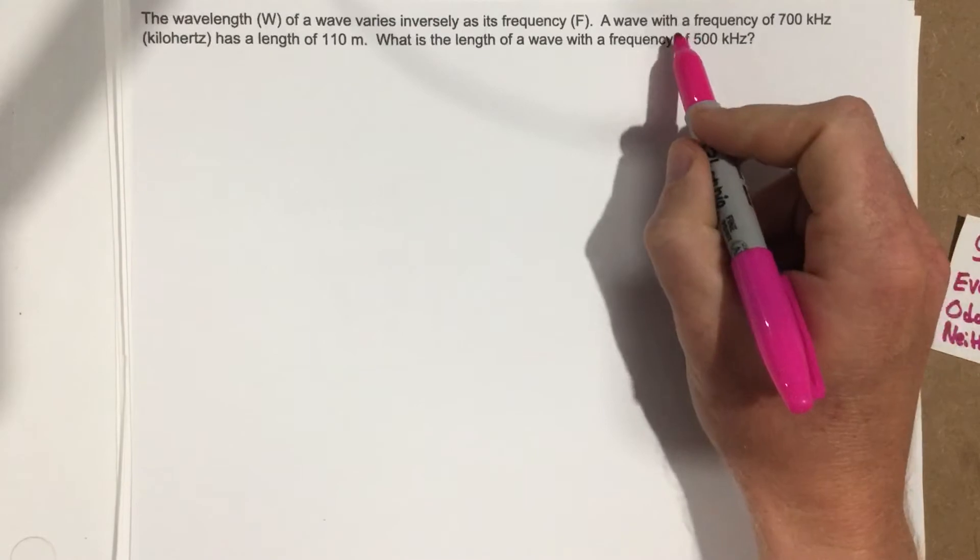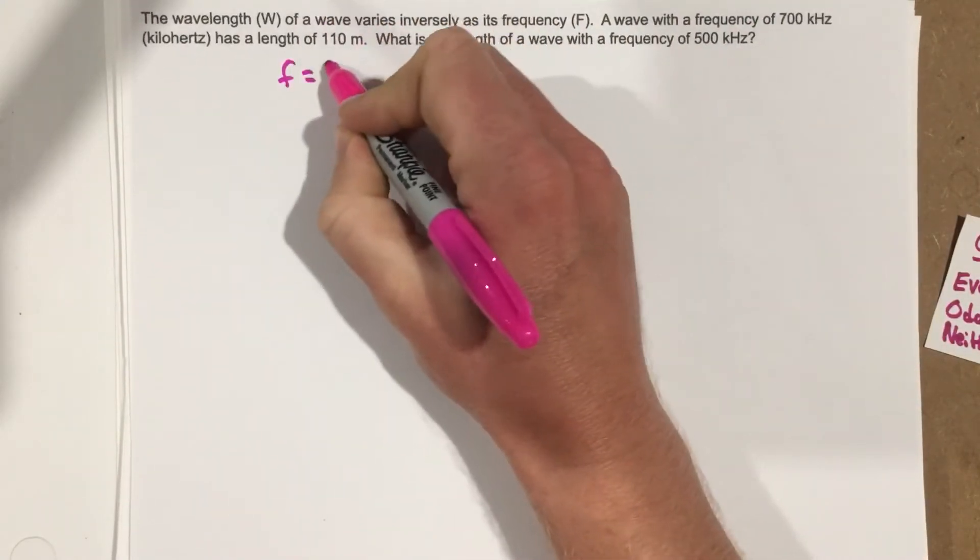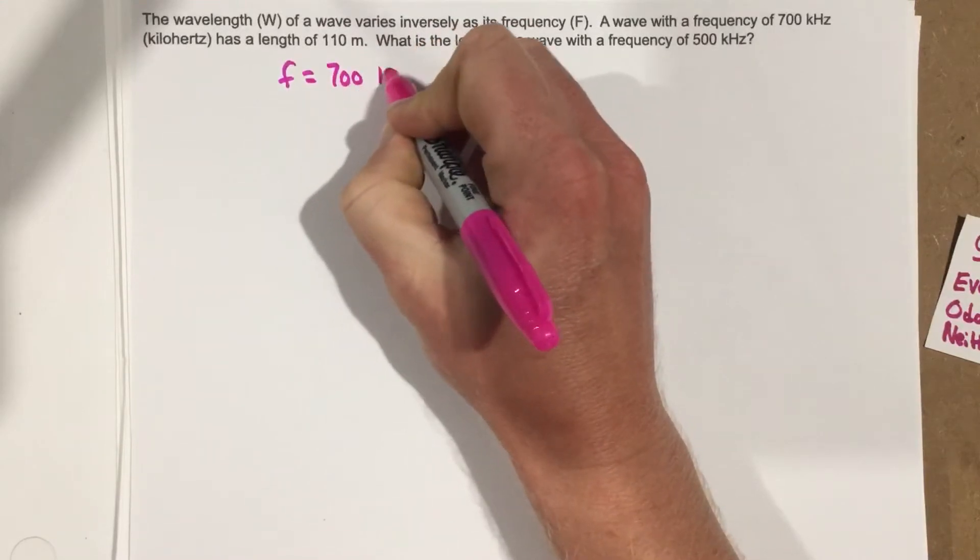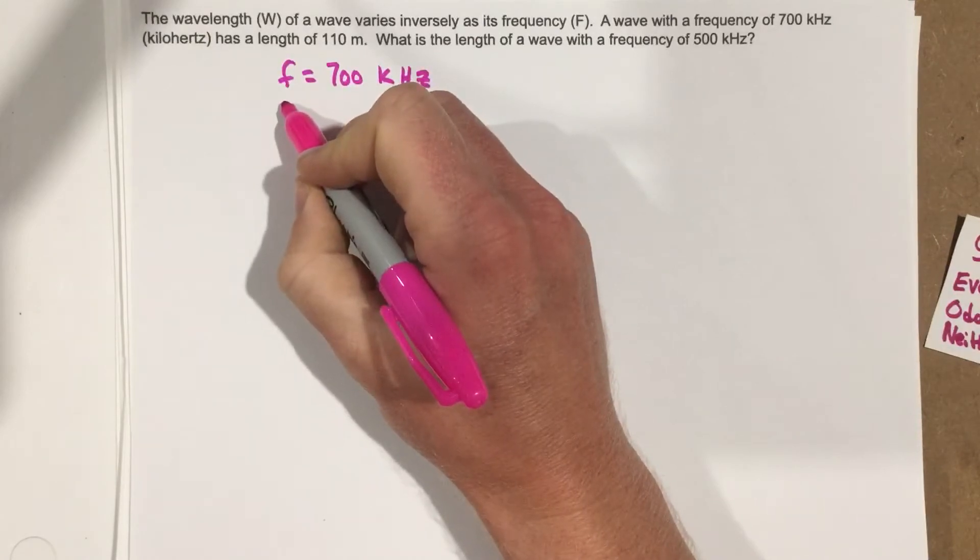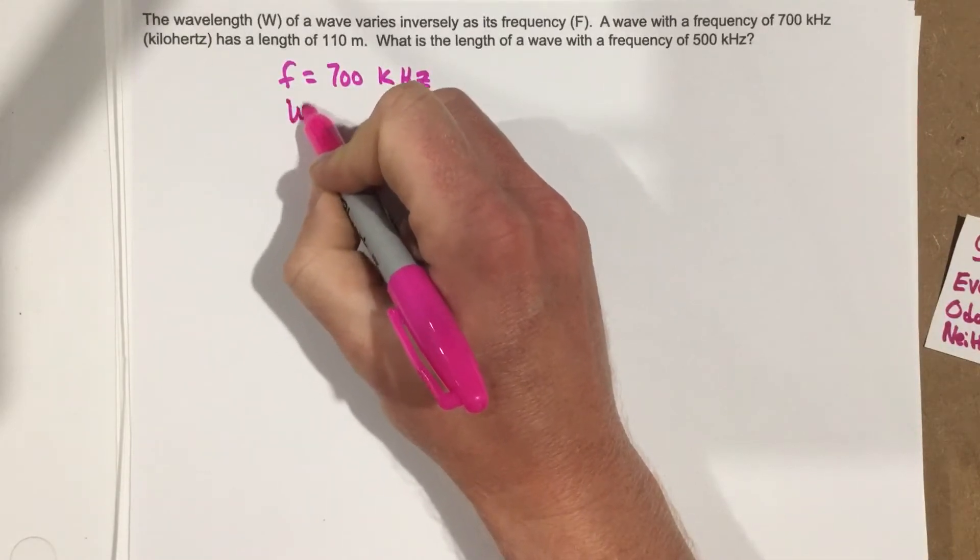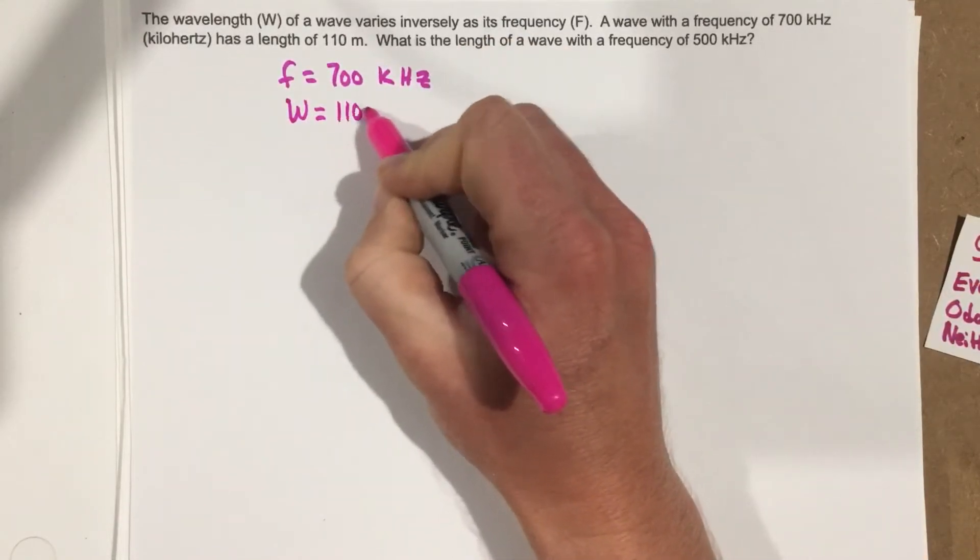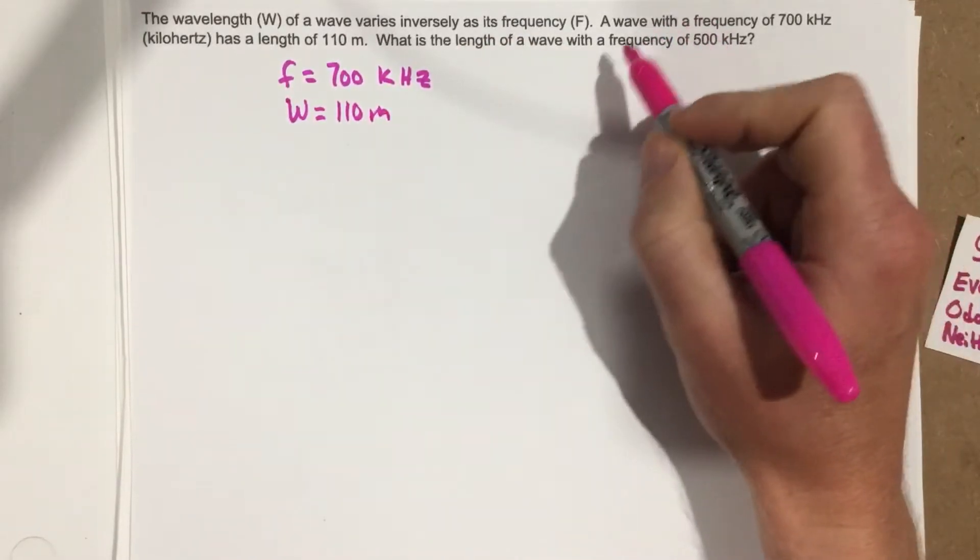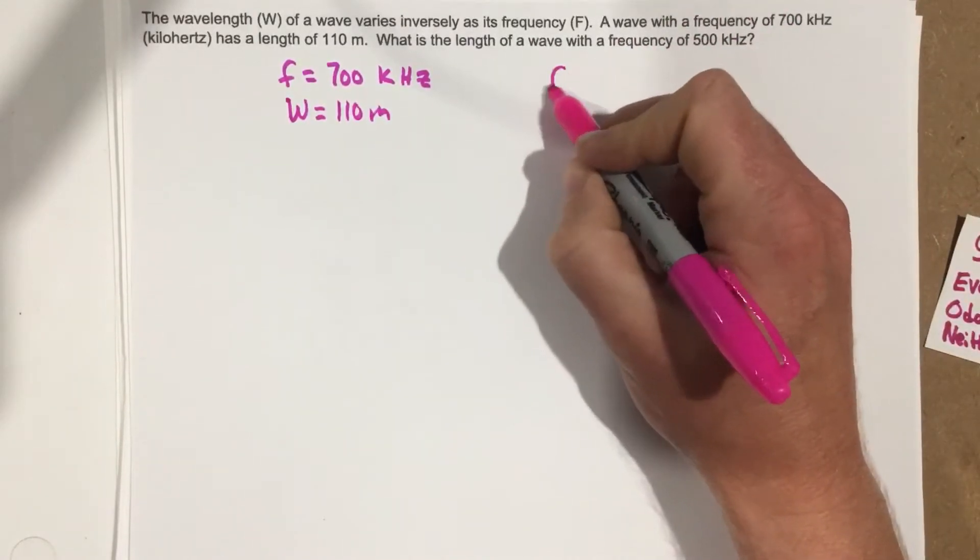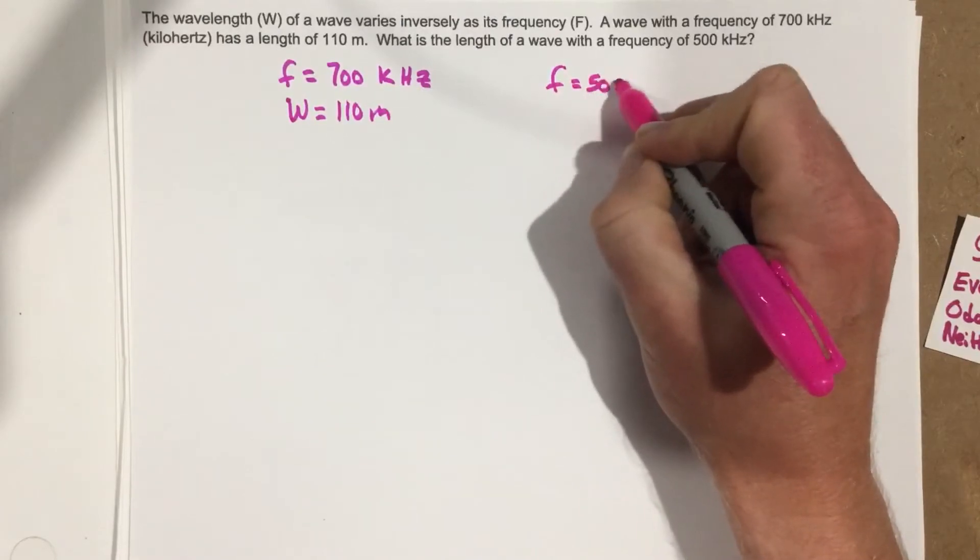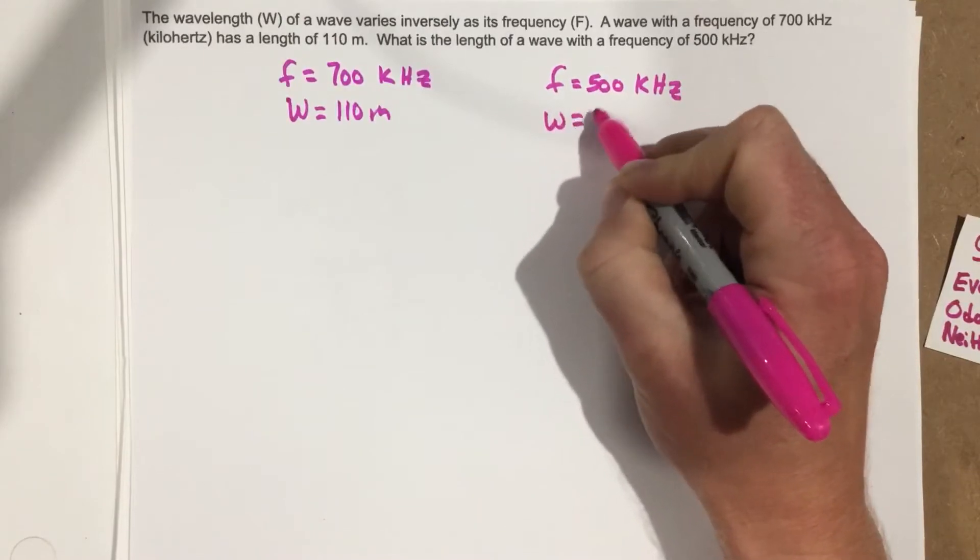Let's write down what we have here. We have a frequency for the original one of 700 kHz. And we have a length, which I'm going to just say W for wavelength, which is 110 m. For the other one we're given 500 kHz. So our frequency for the other one is 500 kHz, and we're looking for W here.